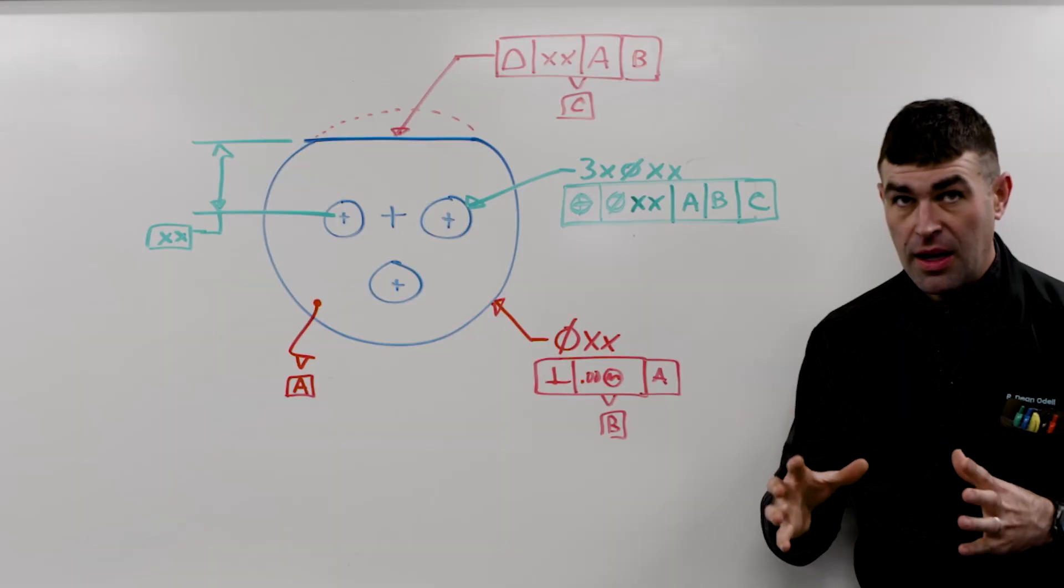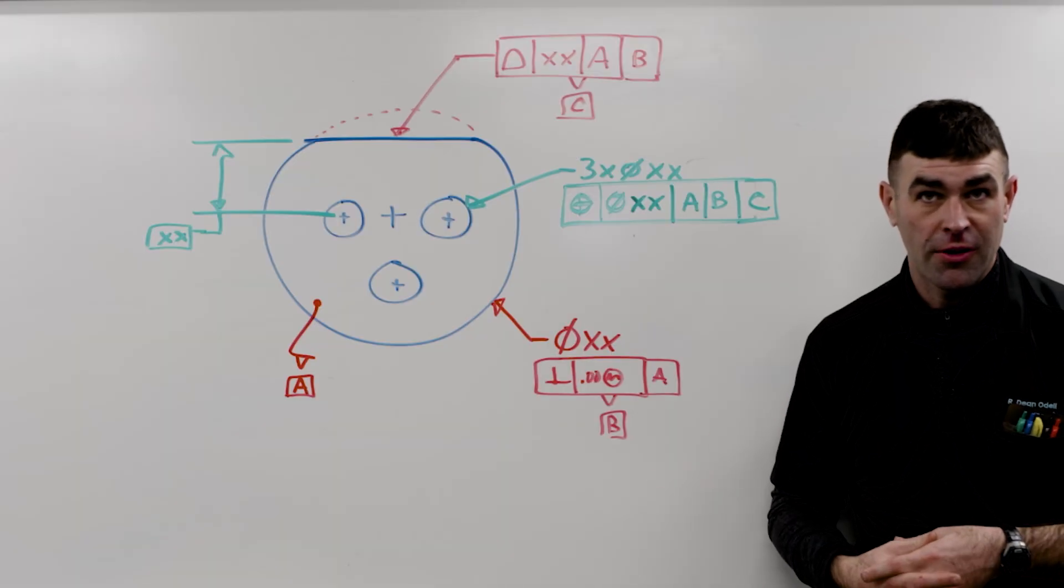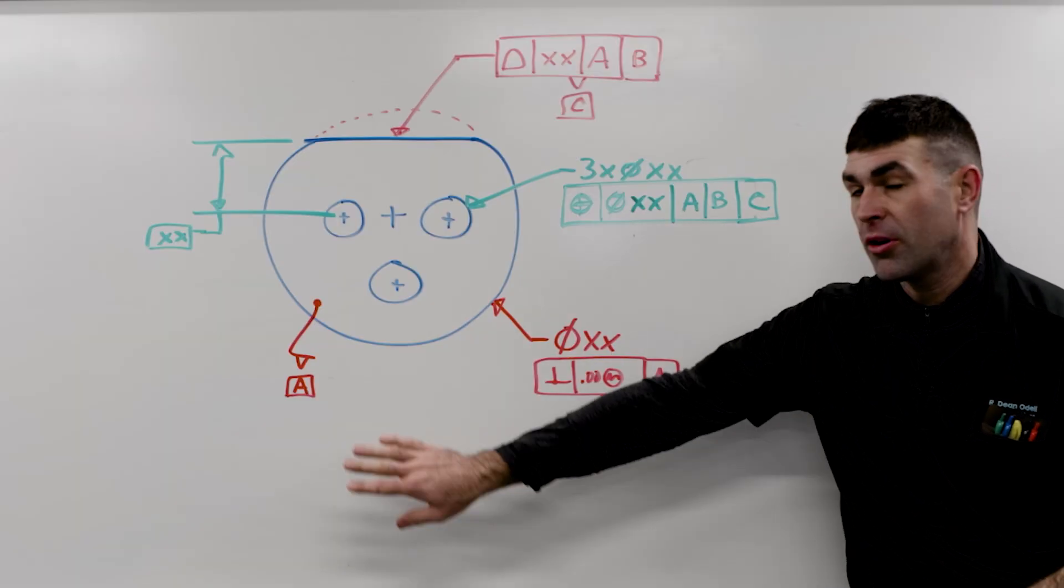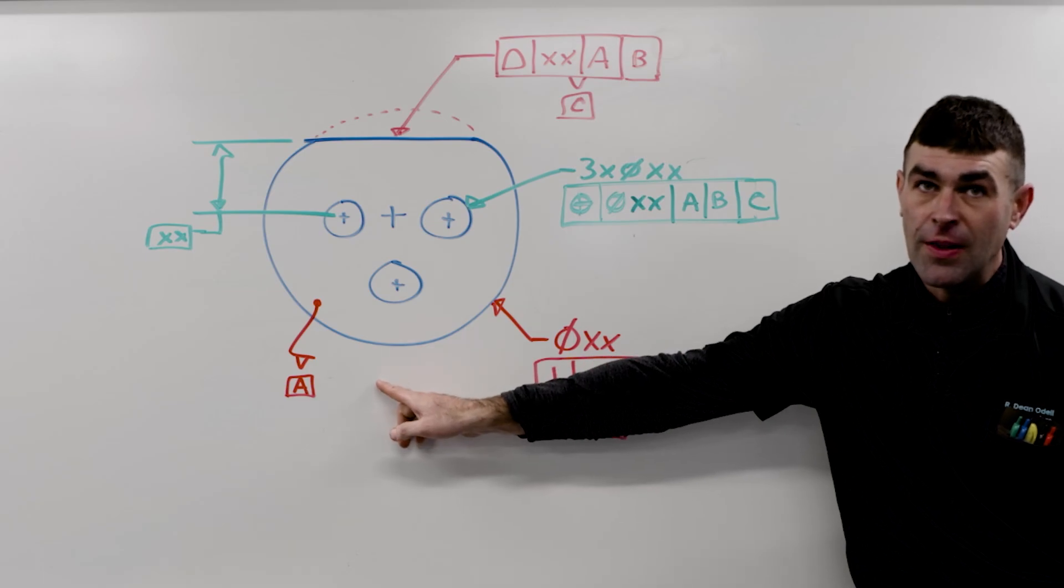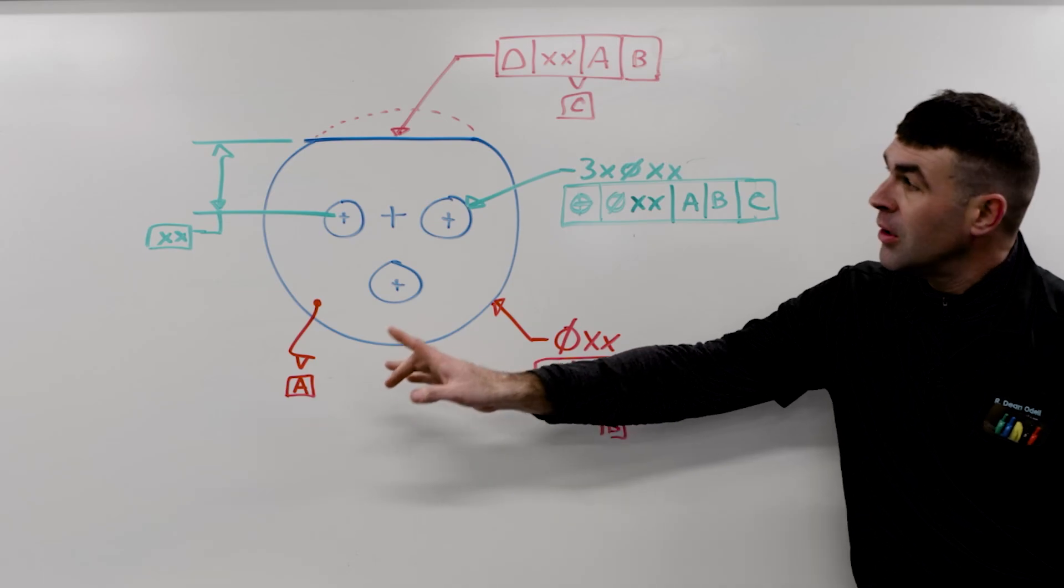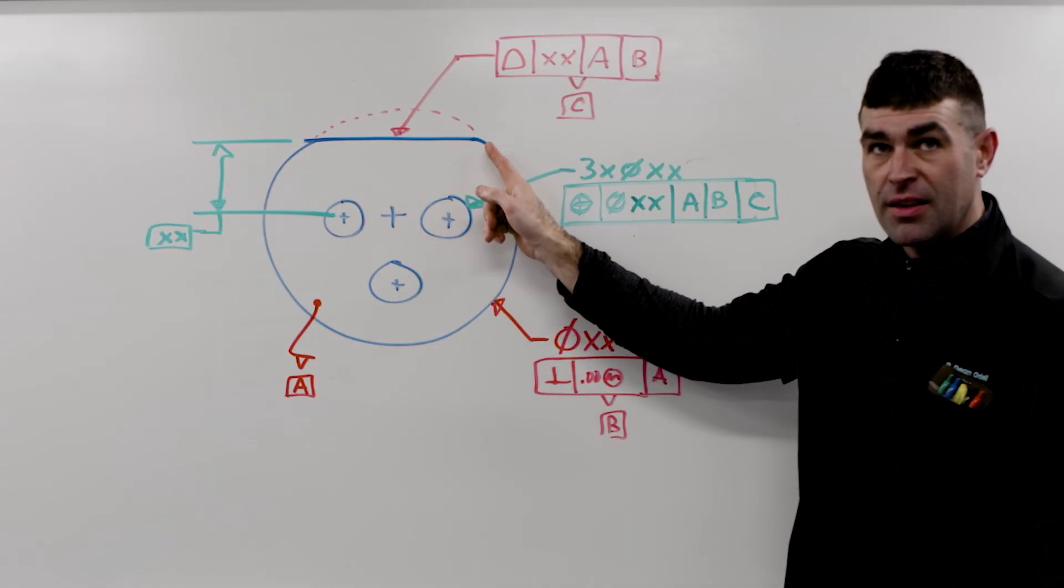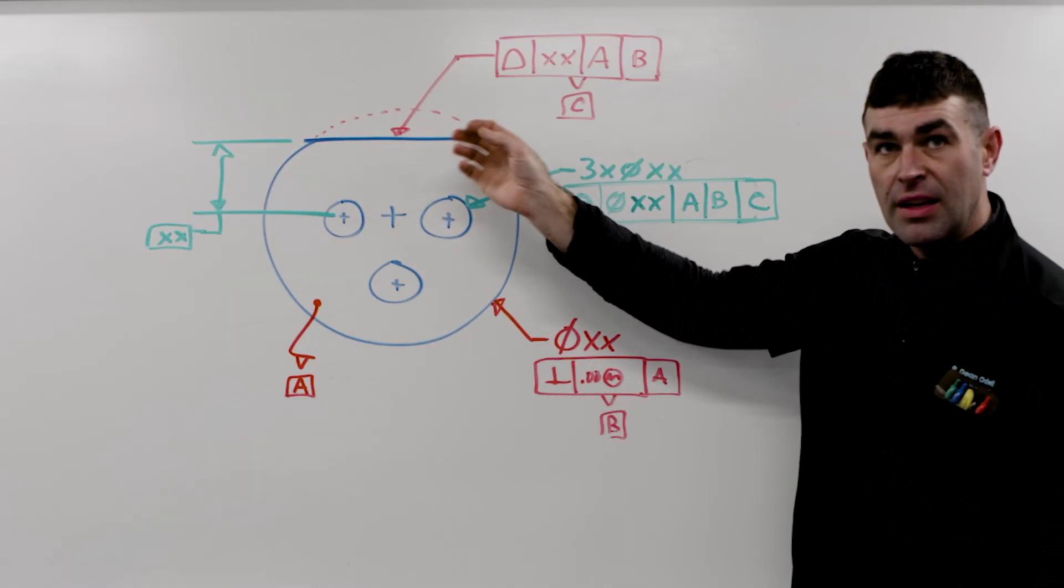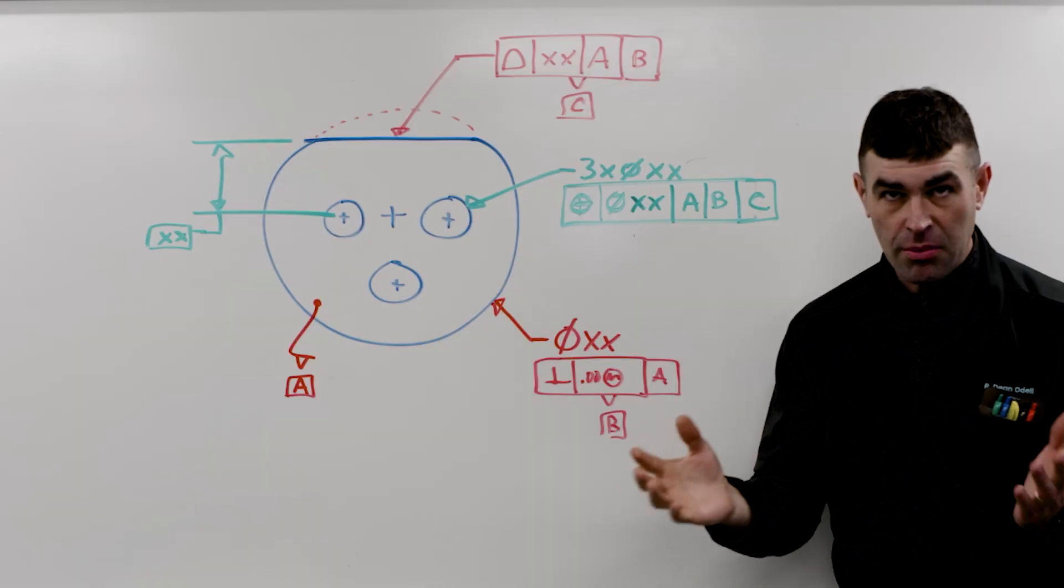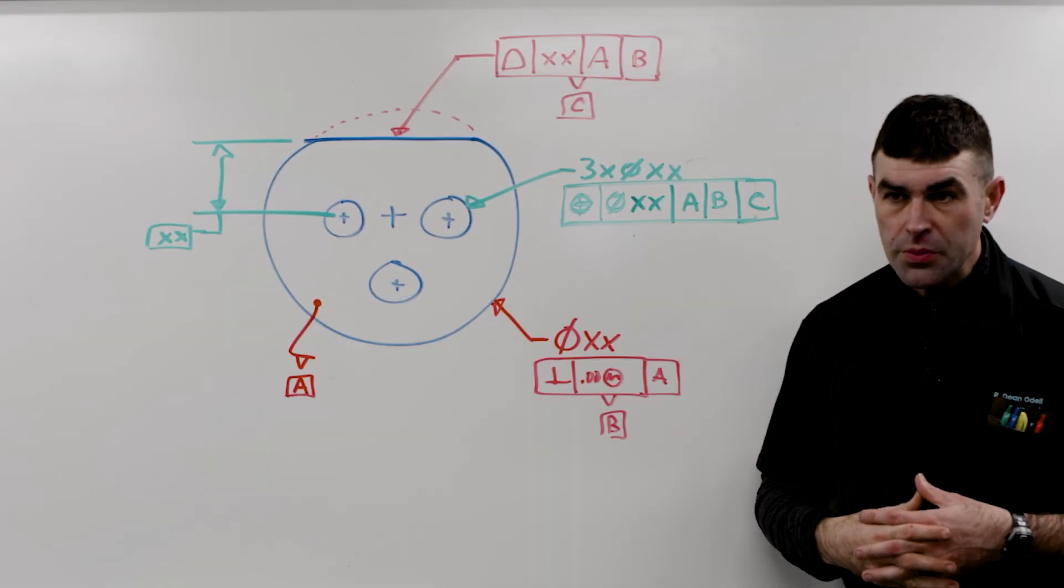Well, when we set up our true geometric counterpart, like all our imaginary stuff, perfect plane for A, perfect collapsing cylinder for B, we've got to know where we're going to put the plane that is the inverse of this. It has to be at some location.